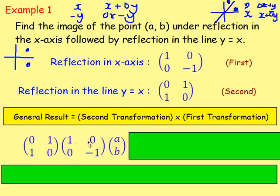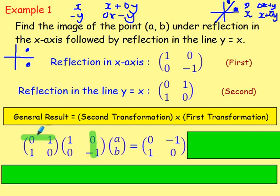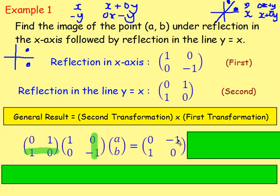Multiplying [0, 1; 1, 0] by [1, 0; 0, −1]: first row, first column: 0×1 + 1×0 = 0. First row, second column: 0×0 + 1×(−1) = −1. Second row, first column: 1×1 + 0×0 = 1. Second row, second column: 1×0 + 0×(−1) = 0. This gives the combined transformation matrix [0, −1; 1, 0]. We still need to multiply that by the point matrix [A; B].